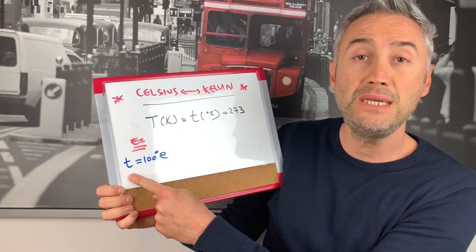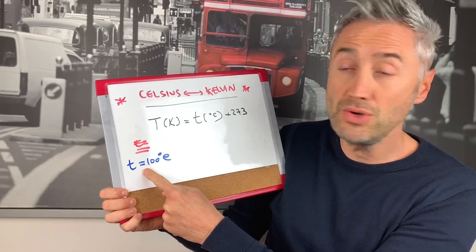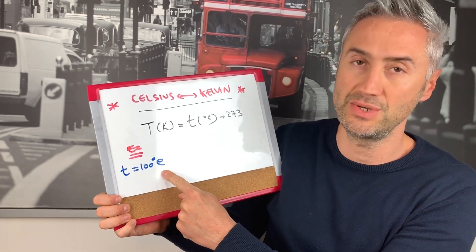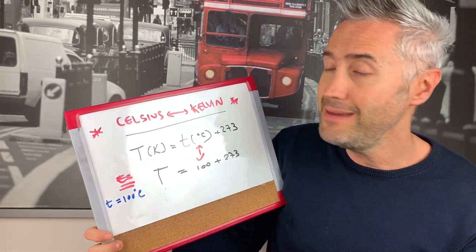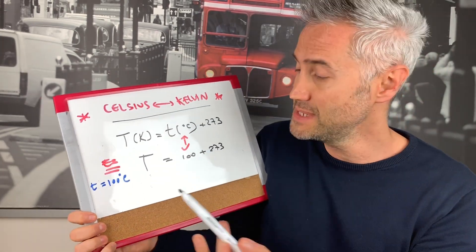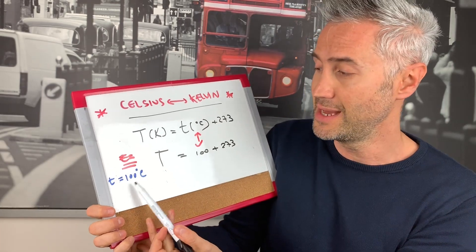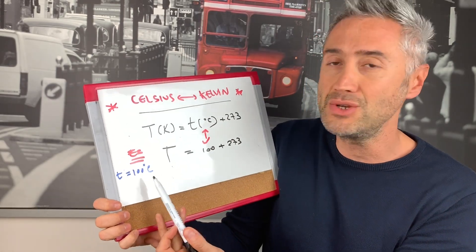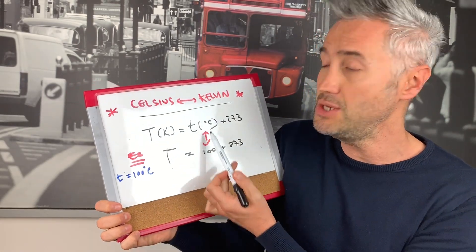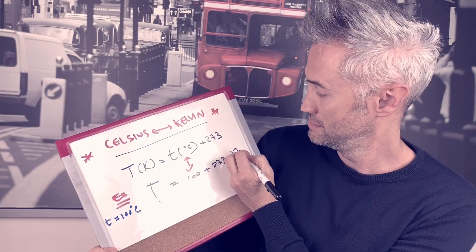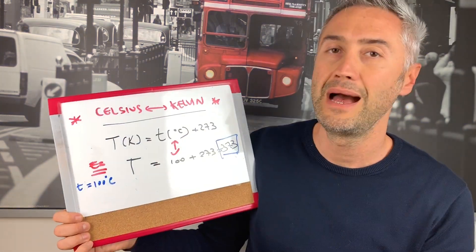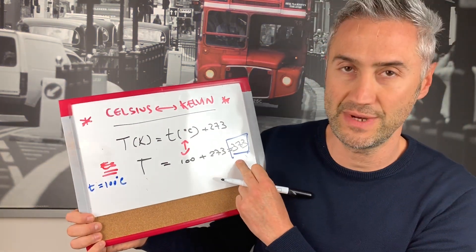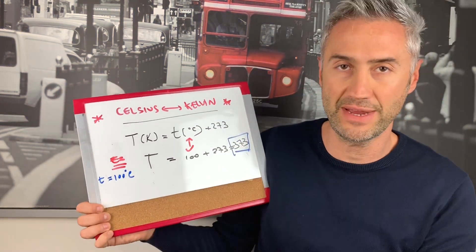Let's have an example. T equals 100 Celsius degrees. I'm going to go ahead and substitute these 100 degrees into my formula. I got 373 Kelvin.